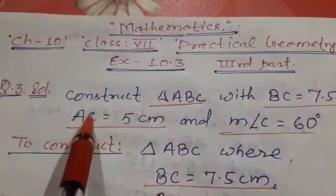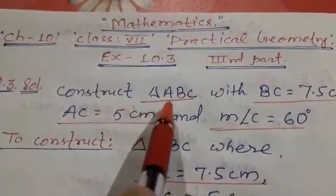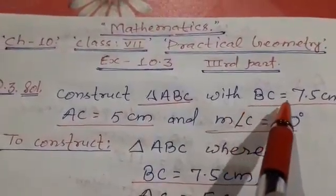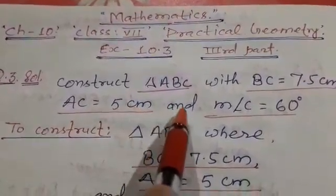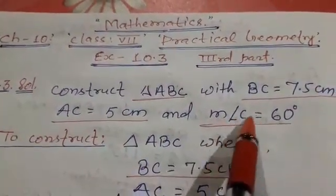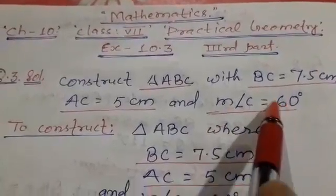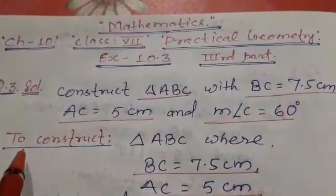Question number third is to construct a triangle ABC with BC equal to 7.5 cm, AC equal to 5 cm and measure of angle C equal to 60 degree.